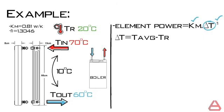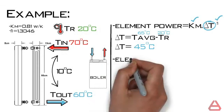So the average radiator temperature would be the average of 70 and 60 and that is equal to 65 degrees Celsius. Therefore delta T would be 65 minus 20 which is equal to 45 degrees Celsius.